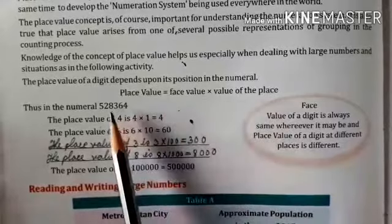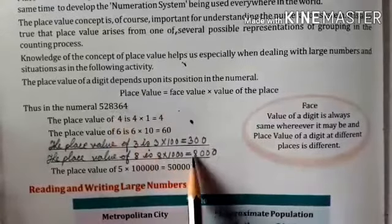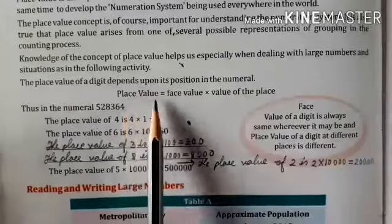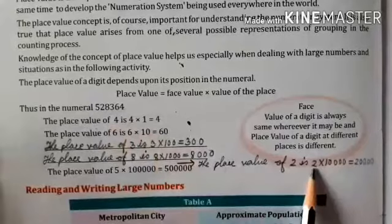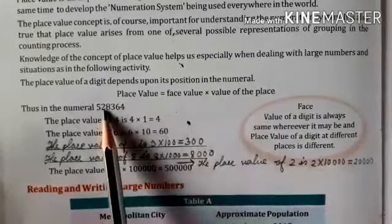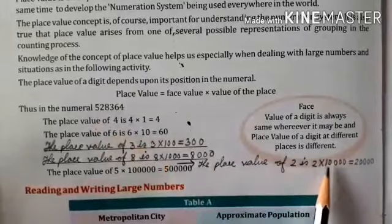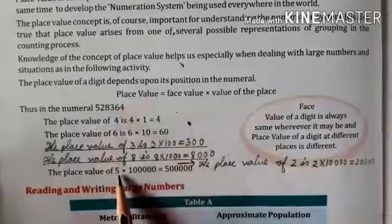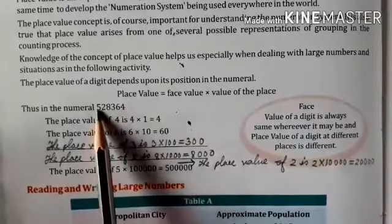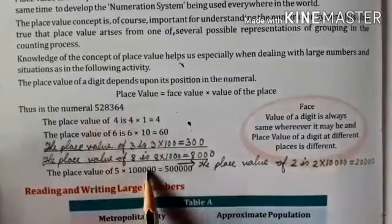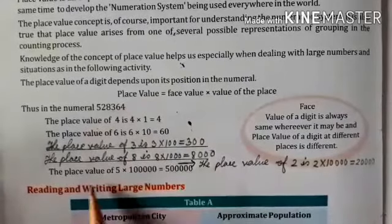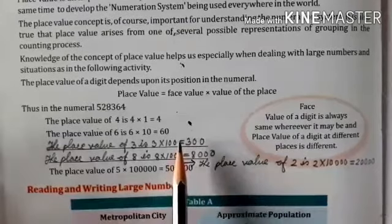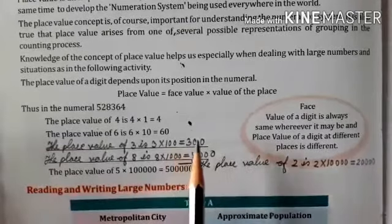The place value of 8 in the ten thousands place: 8 into 10,000 equals 80,000. The place value of 2 in the ten thousands place: 2 into 10,000 equals 20,000. The place value of 5 in the lakhs place: 5 into 1 lakh equals 5 lakh. So remember that the place value of a digit depends upon its position.